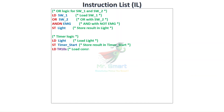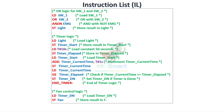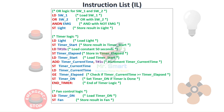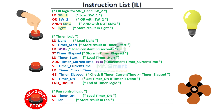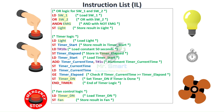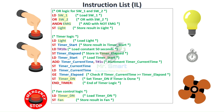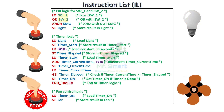Instruction list is a low-level, text-based language that uses simple, compact commands to control operations. It's similar to assembly language in traditional programming. While IL is not as user-friendly as other languages, its concise nature makes it efficient for systems with limited memory or processing power. Though less commonly used today, IL can still be valuable for troubleshooting legacy systems or creating highly optimized code.